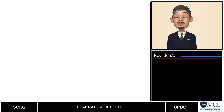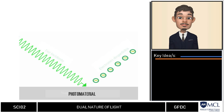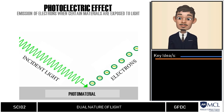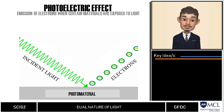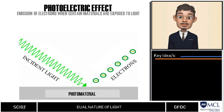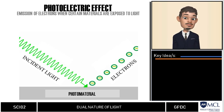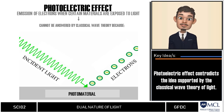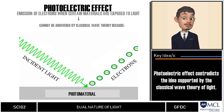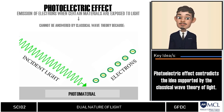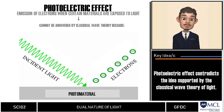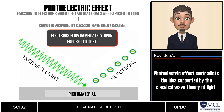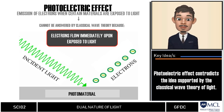In the latter part of the 19th century, scientists observed that electrons are emitted when certain metals are exposed to light. This phenomenon was called the photoelectric effect. It intrigued many scientists because it could not be answered by the classical wave theory, which considered light as a wave with a continuous flow of energy. The amount of energy necessary to free an electron from a photo material could be easily calculated, but according to wave theory, it would take an appreciable amount of time for electromagnetic waves to supply that energy. Yet it was observed that electrons flow immediately upon being exposed to light.